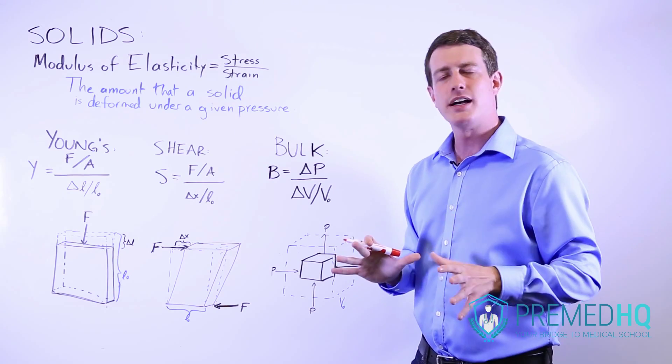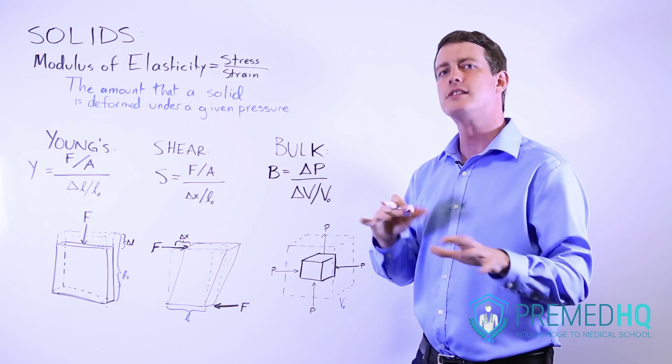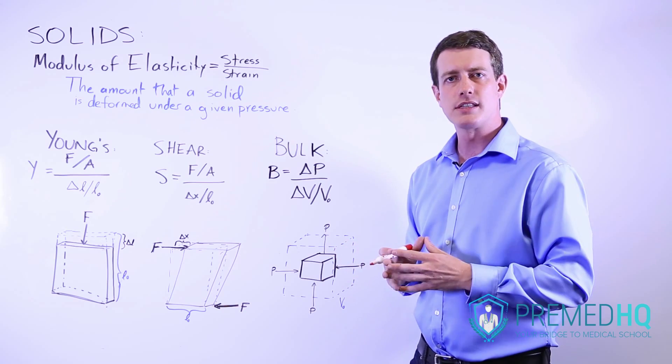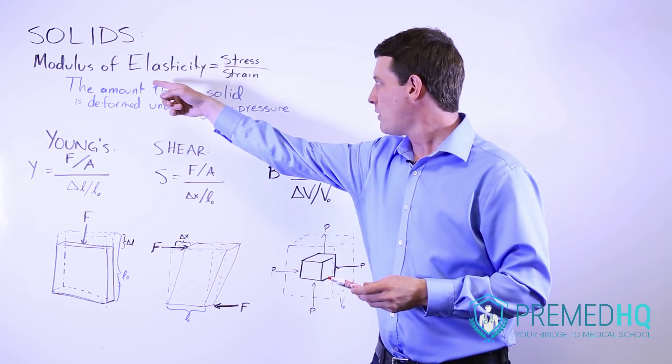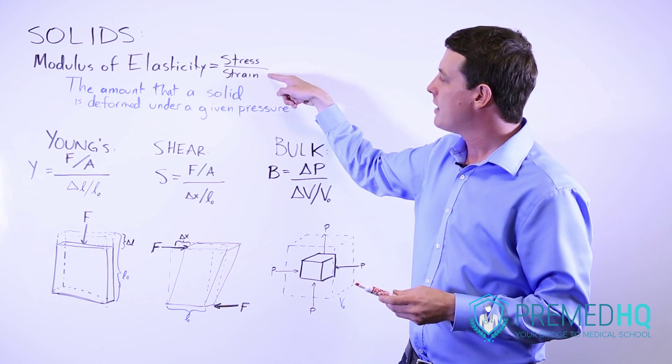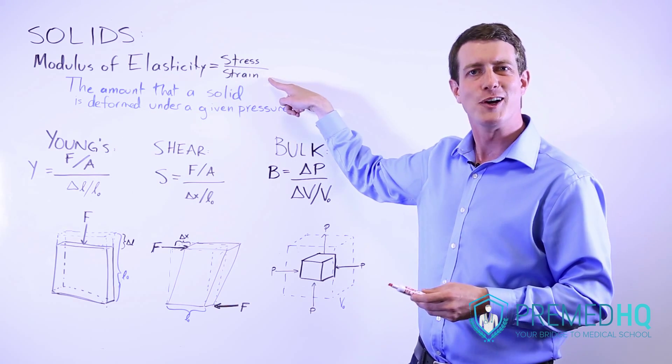And so the bottom line is rather than dealing with units and complex formulas and things like that break it down into really simple things. If the modulus is small and the stress is the same that means the strain must be rather large.